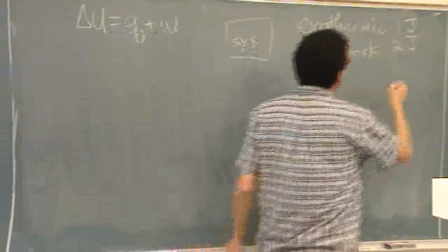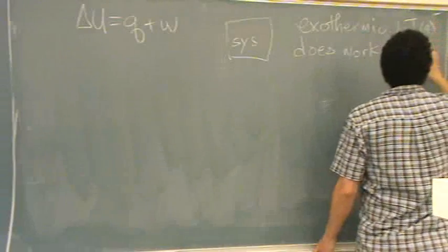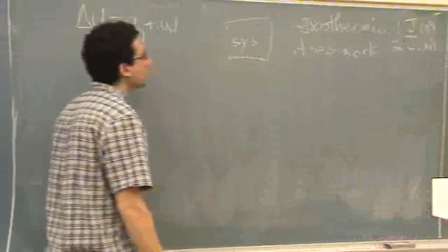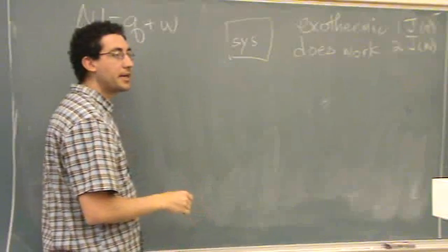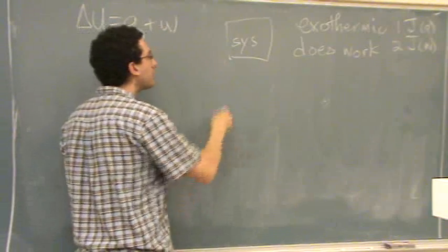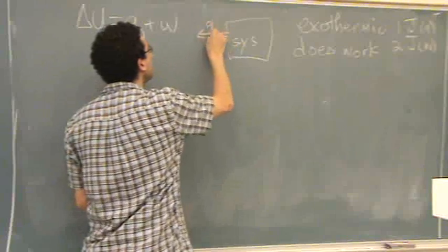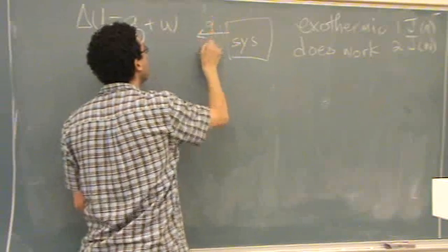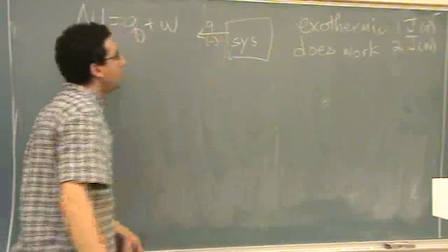Exothermic. So this has to do with Q. Work has to do with W. Exothermic, is Q going to be positive or negative? Negative. Yeah, it's leaving. Q is going to leave and that's going to be a negative number. How about work?